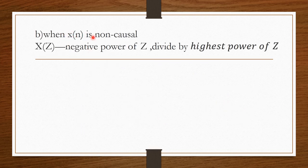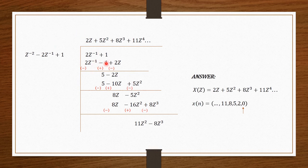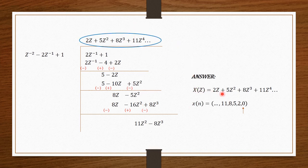For subdivision B, X of N is non-causal and X of Z is expressed in negative powers of Z, so we divide starting from the highest power of Z: denominator becomes Z power minus 2 minus 2Z power minus 1 plus 1, and numerator is 2Z power minus 1 plus 1. Multiplying Z power minus 2 by 2Z gives 2Z power minus 1. Then minus 2Z inverse times 2Z gives minus 4, and 1 times 2Z gives 2Z. After simplification, X of Z equals 2Z plus 5Z square plus 8Z cube plus 11Z power 4, and so on.